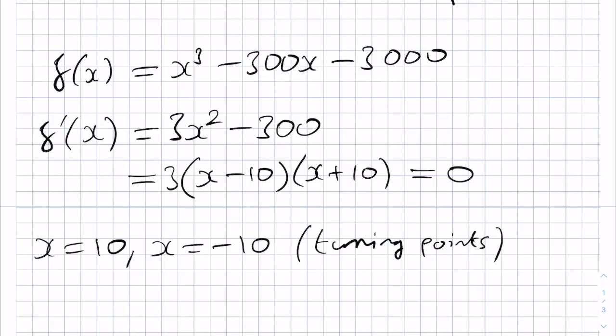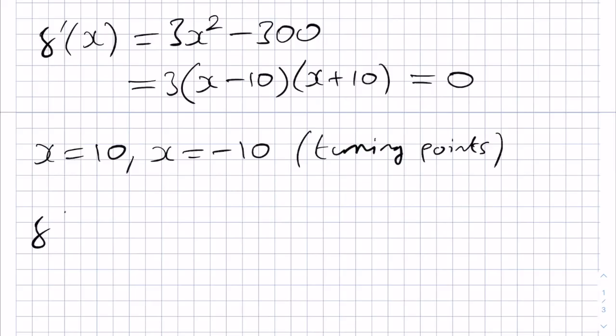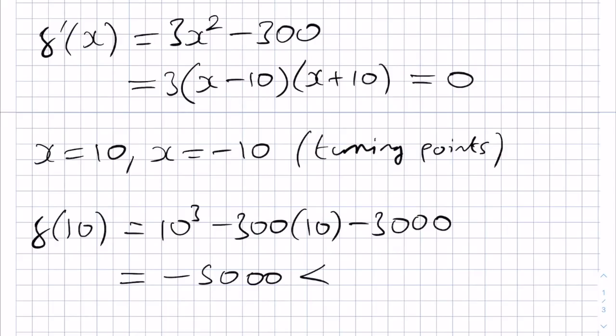Then we should find the corresponding f values for these turning points. So if we have f(10), for example, then this would be 10³, and then we have -300 lots of 10 - 3000. This is 1000 - 6000, and so certainly it's negative, but in particular, -5000.